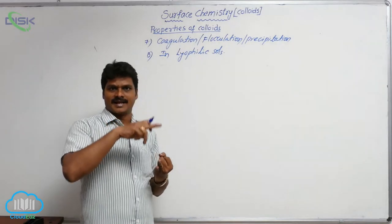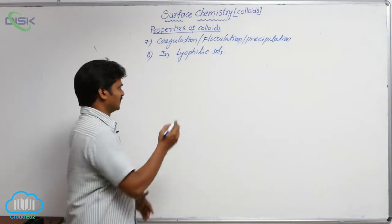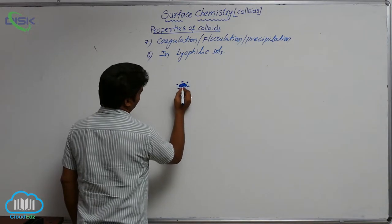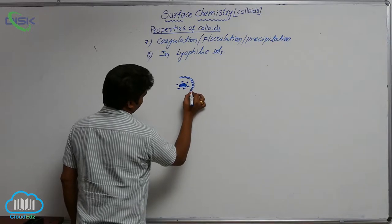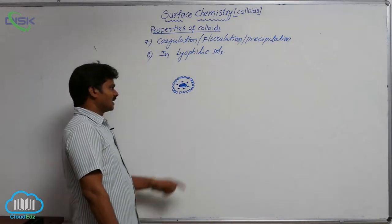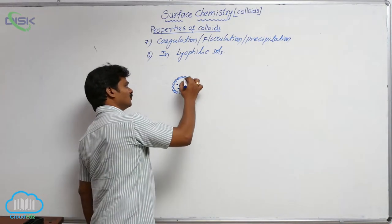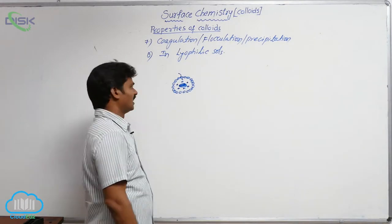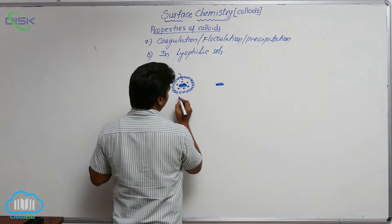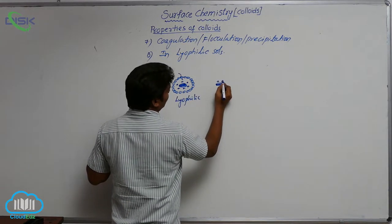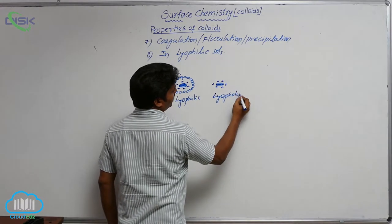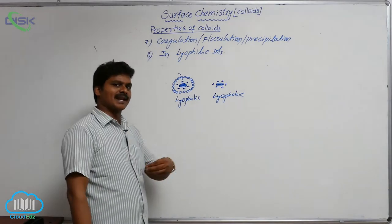A lyophilic colloidal particle is surrounded by charges and also by solvent molecules — that is, the dispersion medium. There are two layers around it: a charged layer and a solvation layer. In contrast, a lyophobic sol only has charges around the colloidal particles. If you neutralize those charges, the lyophobic sol automatically coagulates, so only the addition of salt is sufficient.